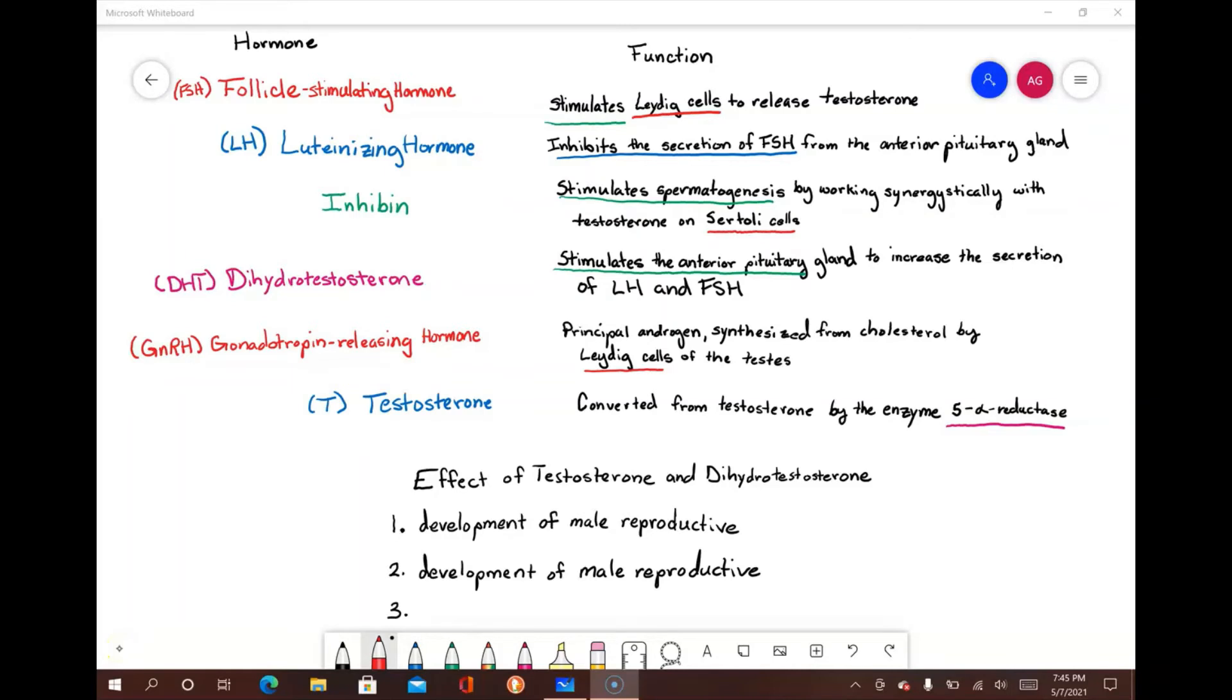The most important hormones that regulate the male reproductive system include gonadotropin-releasing hormone, follicle-stimulating hormone, inhibin, testosterone, and dihydrotestosterone. When a male reaches puberty, hypothalamic neurosecretory cells increase the secretion of gonadotropin-releasing hormone, which stimulates the anterior pituitary gland to increase the secretion of LH and FSH. Luteinizing hormone is responsible for stimulating Leydig cells to release testosterone.